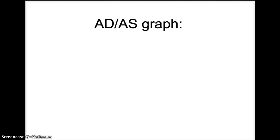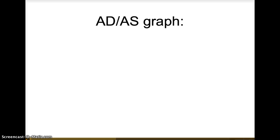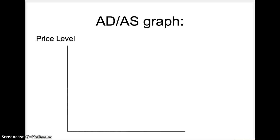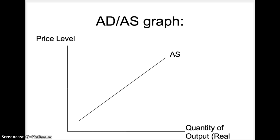The aggregate demand, aggregate supply, or ADAS model can be shown on a diagram. The price level is a nominal variable on the vertical axis. The quantity of output, a real variable measured by real GDP, is on the horizontal axis. The aggregate supply curve is upward sloping and the aggregate demand curve is downward sloping. As prices decrease, the quantity demanded will rise. Equilibrium occurs where the two curves cross, giving us the equilibrium price level P* and the equilibrium quantity of output Q*.